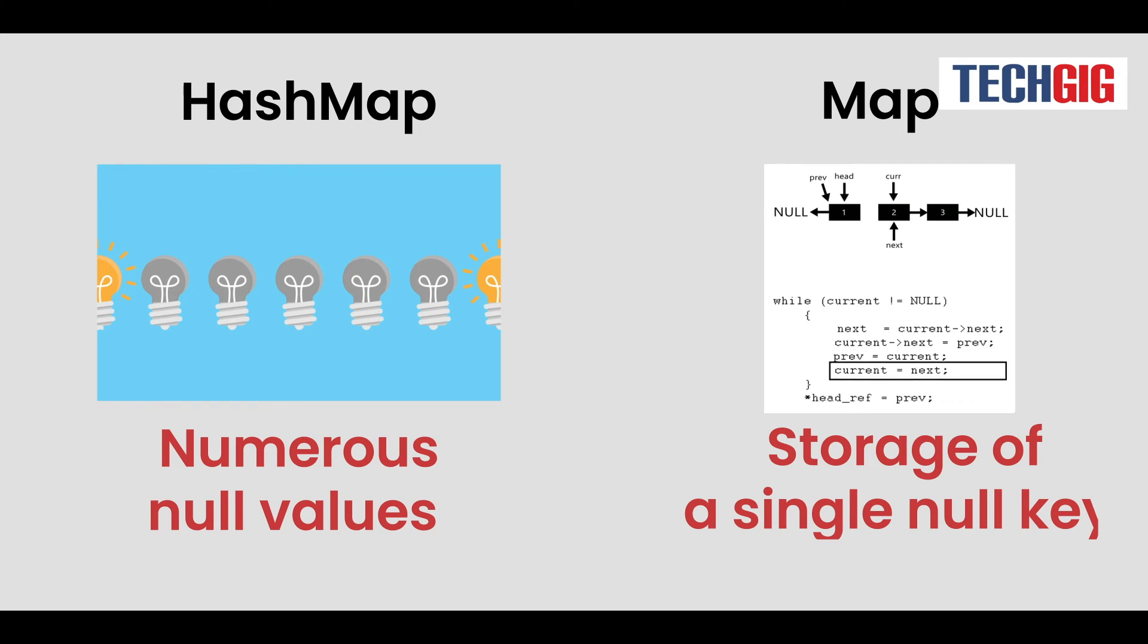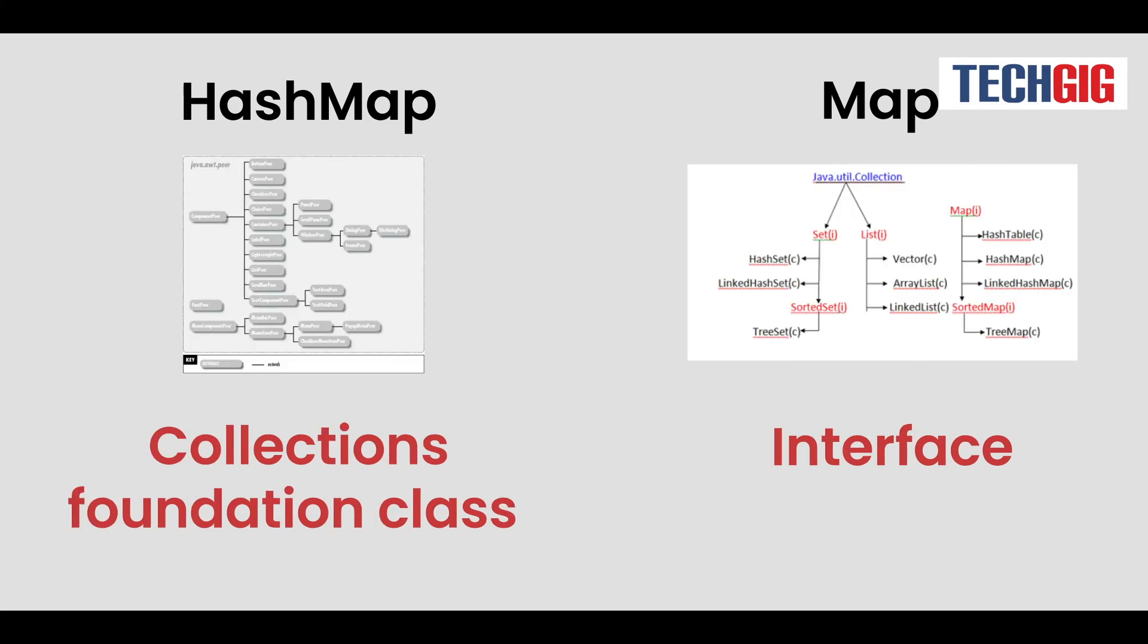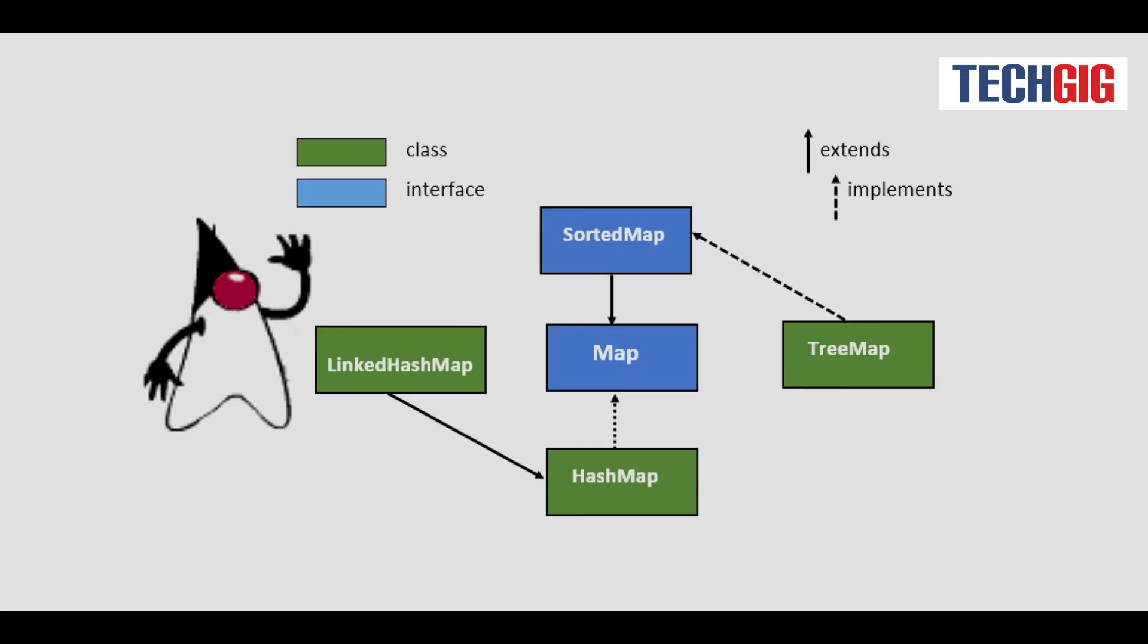HashMap is a non-synchronized Java collections foundation class, unlike Map, which is an interface. HashMap and TreeMap are two Map implementations, with HashMap making use of the Map interface.